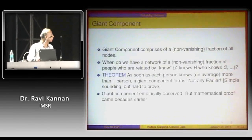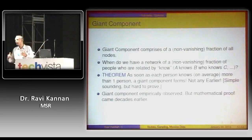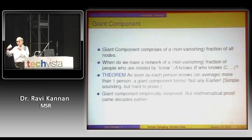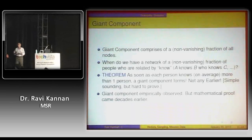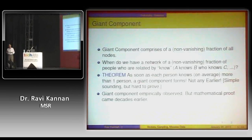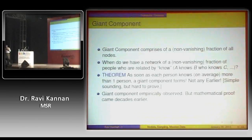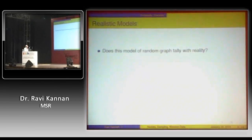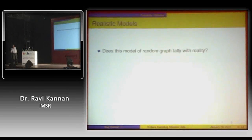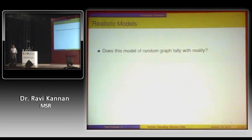Erdős and Rényi proved that as soon as each person knows, on average, more than one person, then there's a giant component. It's simple-sounding but hard to prove. We now have very large graphs — the web and social networks — and giant components are often observed. But the mathematical proof came earlier. I'm a theoretician, as you will have detected.